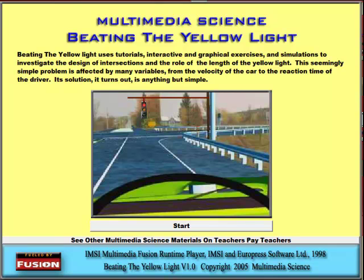When I first started to work on this application, I thought this was going to be simple. Turns out that it's anything but simple. There are many, many variables, including the velocity of the car, the reaction time of the driver, the length of the yellow light, the distance from the intersection, and the width of the intersection.